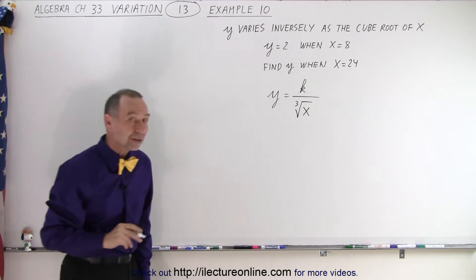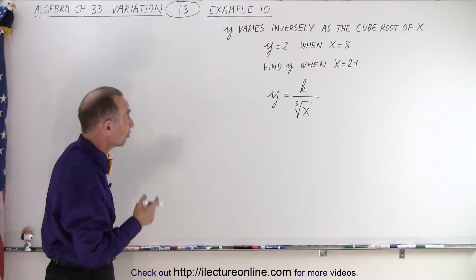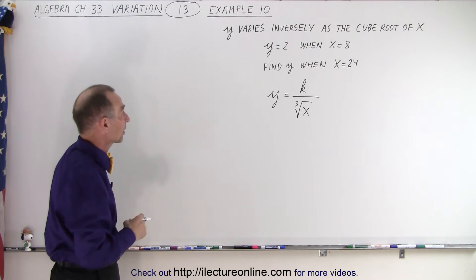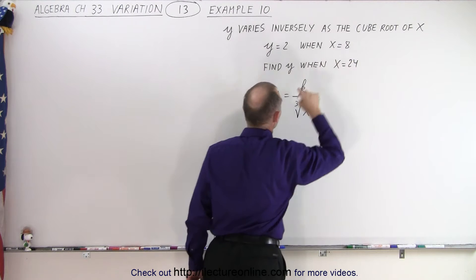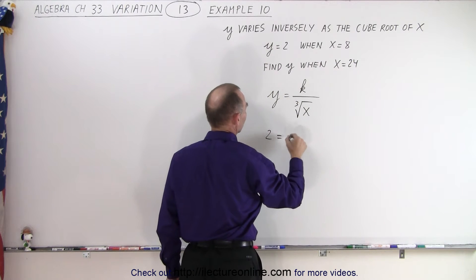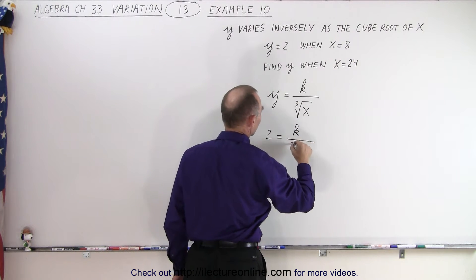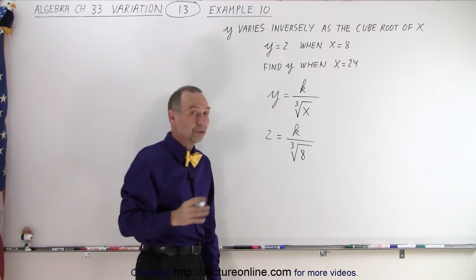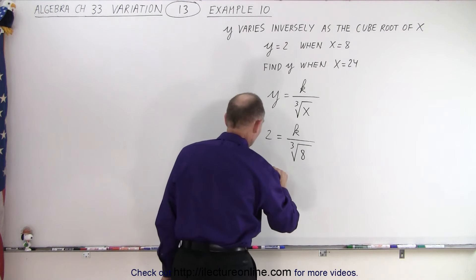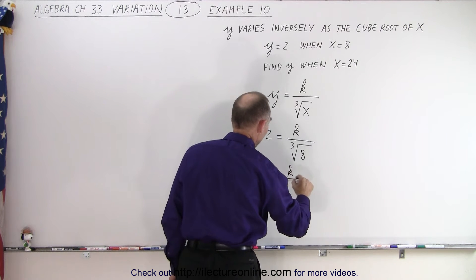And we're given some values, so the first thing we should do is try to find the value for k. And we do that by plugging in these values for y and x. So we get 2 is equal to k divided by the cube root of x, which in this case is 8. And the cube root of 8, well that's equal to 2, so 2 is equal to k divided by 2.